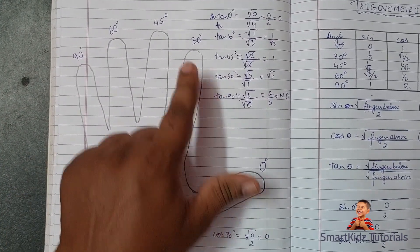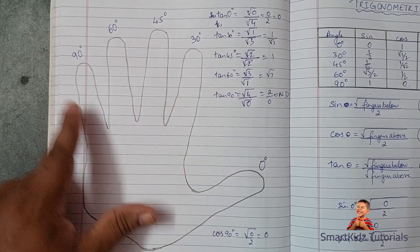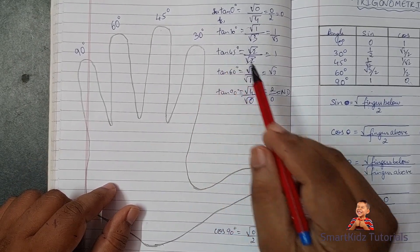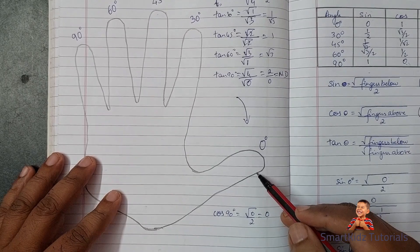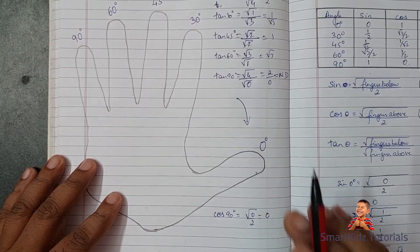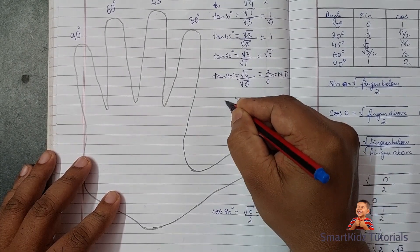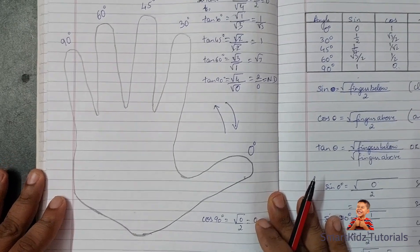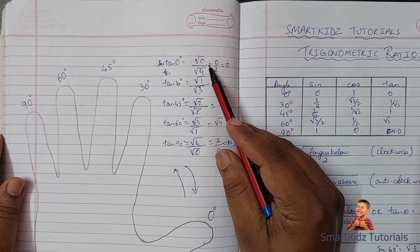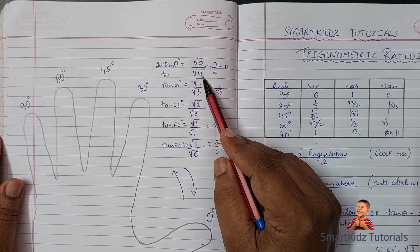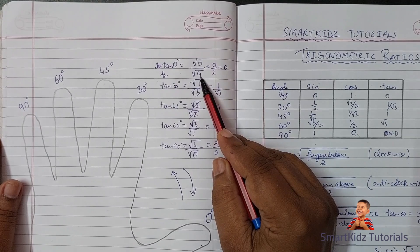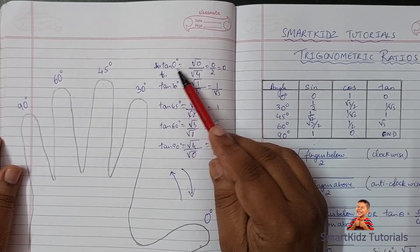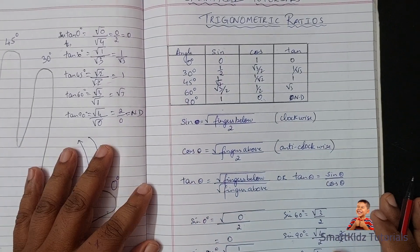Remember: assign 0°, 30°, 45°, 60°, 90° to your five fingers starting from the thumb. For sine, we go clockwise — we look at fingers below the closed finger. For cosine, we go anti-clockwise — we look at fingers above the closed finger. And for tan, either use sine upon cos, or square root of fingers below upon square root of fingers above.